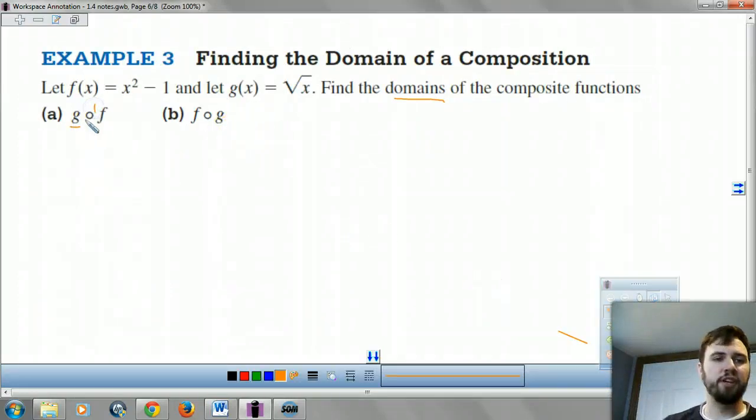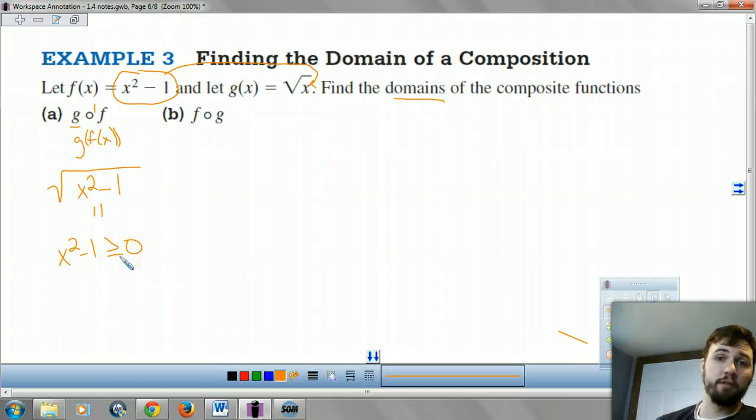So our g composed with f is the same thing as g of f of x. So we take our f of x and plug it in for our x on g of x. So we get square root of x squared minus 1. Because we're plugging in f of x in for x on the g of x. Now, my domain, remember you take this piece, you say greater than or equals 0. Because square root, you can't take the square root of a negative, not in the real world. And that's where we are, I think. Yes, we are.